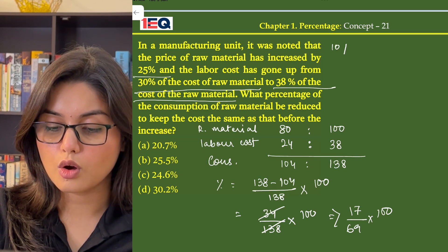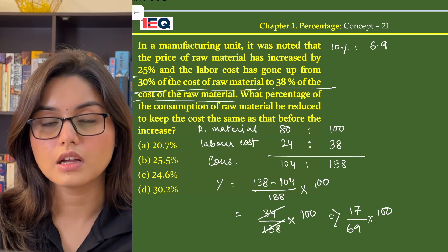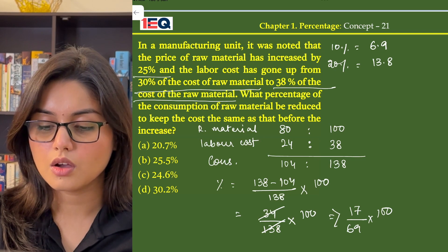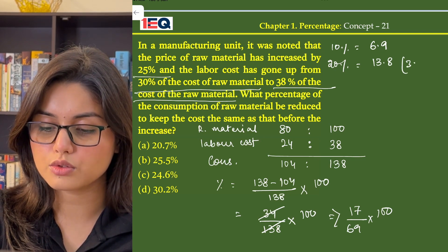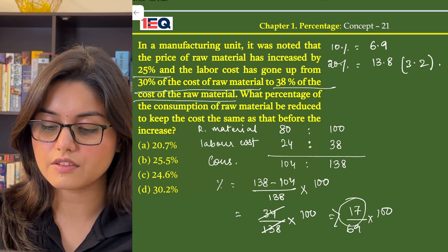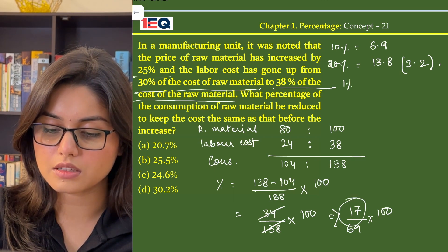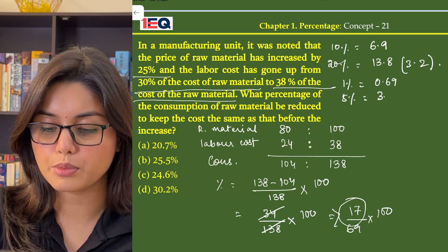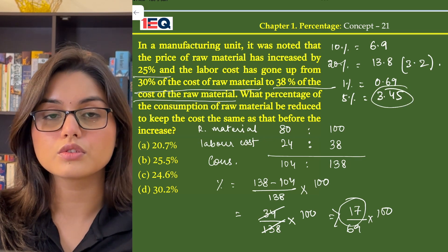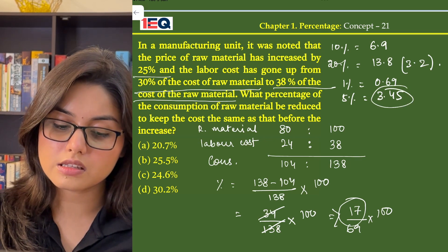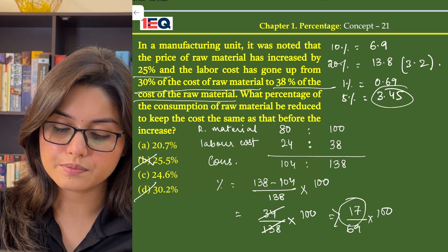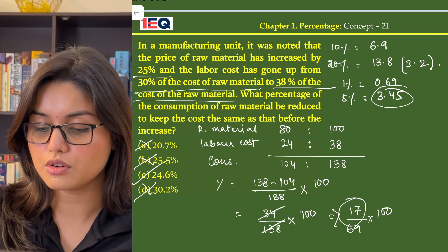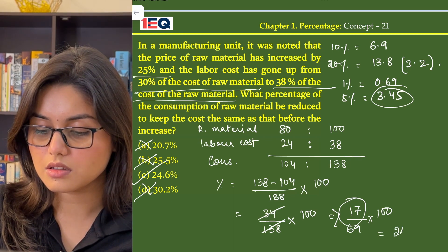Now, 10% of 69 is 6.9, that means 20% will be 13.8. We need 3.2 more in order to get 17. If 1% of 69 is 0.69, then 5% will be 3.45, which is more than the amount we need. That means our answer is less than 25% but more than 20%. So, the correct option is C, that is 24.6%.